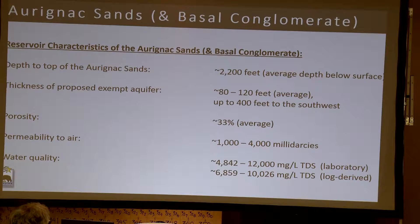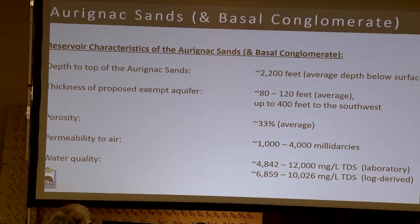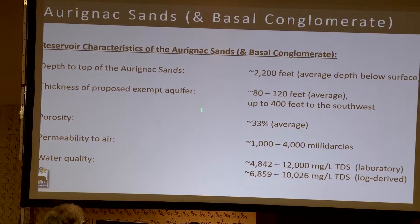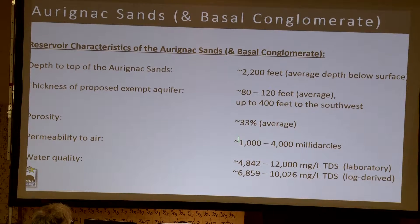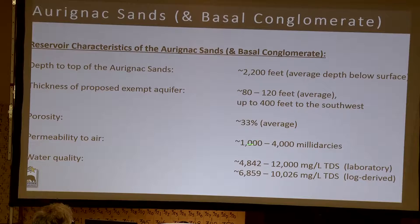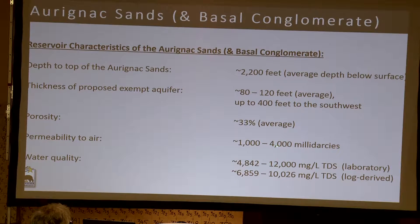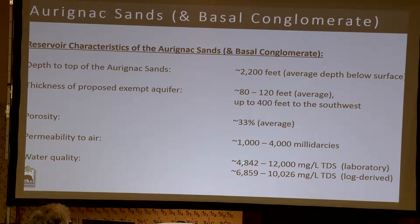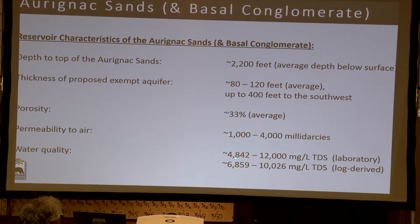This shows the reservoir characteristics of the Aranac sands and the basal conglomerate, and we can see it's very similar. It ranges in thickness, has high porosity, and is relatively permeable, with millidarcies in the 1,000 to 4,000 range. Total dissolved solids content ranges from 4,800 to over 12,000.